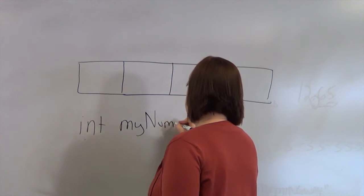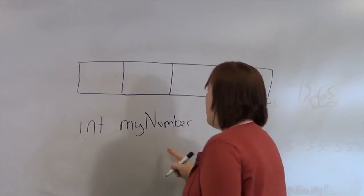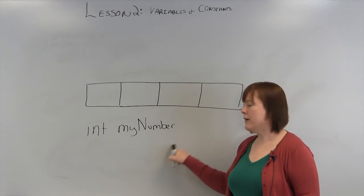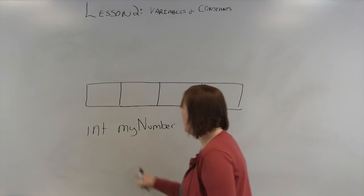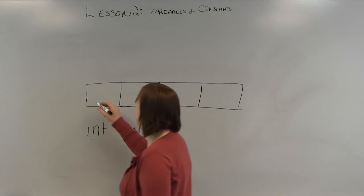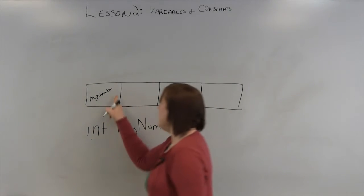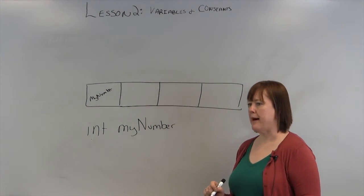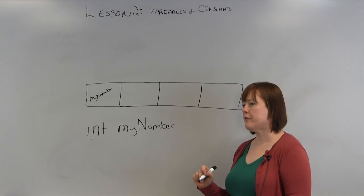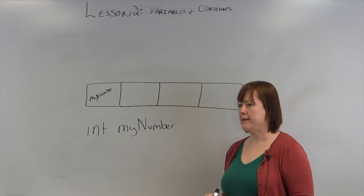My number. By doing this, you have declared a variable named my number and you've assigned it to a spot in memory. Now the value that's stored in that memory spot can change. But any time you refer to it, it will be referred to by my number.